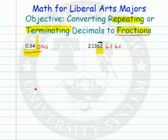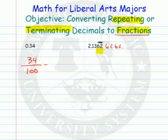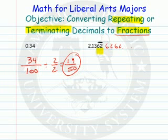The first one's kind of easy. If we read this without the extra zeros, we would read it as 34 hundredths, and we'd write it as the fraction 34 over 100. Let's put it in simplest form by dividing by 2 over 2, because 2 is the greatest common factor of 34 and 100. We get 17 over 50, and that's the rational number equal to 0.34.